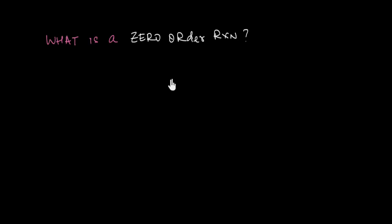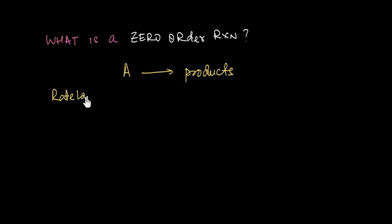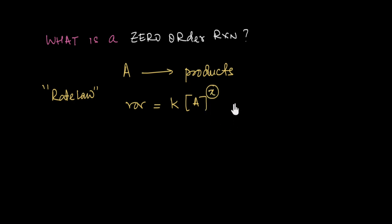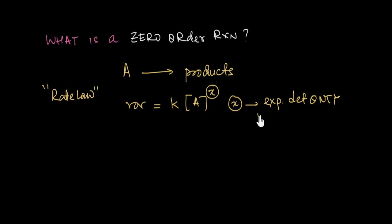What is a zero order reaction? If we have a chemical reaction A giving products, then from the rate law we can write the rate of the reaction to be equal to some constant k multiplied by the concentration of the reactant raised to some power x. This x is an experimentally determined quantity — you can't just look at the reaction and say what x is, you have to figure it out experimentally. This experimentally determined quantity is called the order of the reaction.